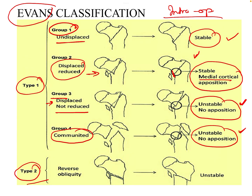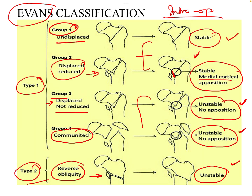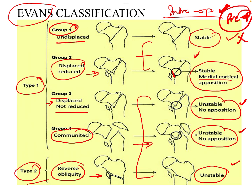In type 2, we include the reverse oblique fractures, which are unstable to begin with. So we have two stable types and three unstable types in the Evans classification, which is an intraoperative classification — we classify the patient intraoperatively whether reduction is achieved or not.